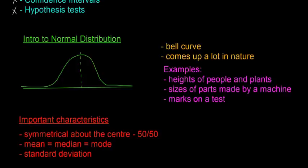So the heights of people and plants can be plotted by a bell curve, the size of parts made by some machines and marks on a test. So say if you were to put marks on a test, you'd have something like zero here, 40 here, let's say 70 here and then maybe 100 here. So most people get around 70, some people get 40 and some people get up to 100.